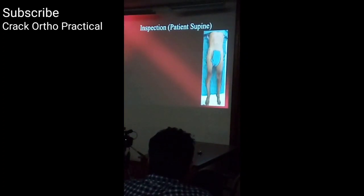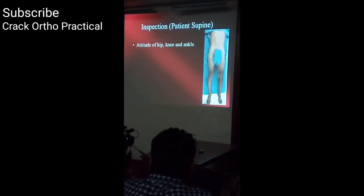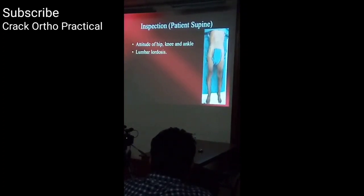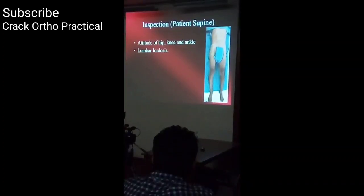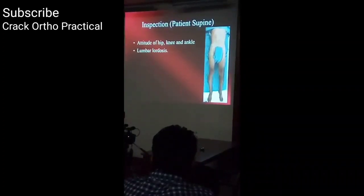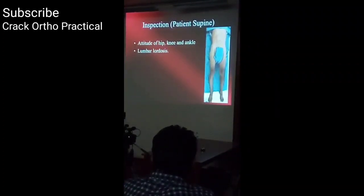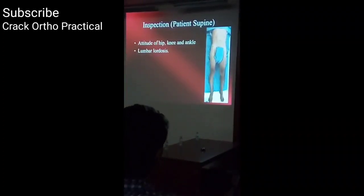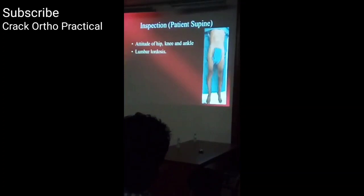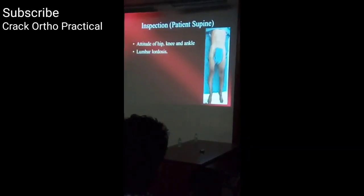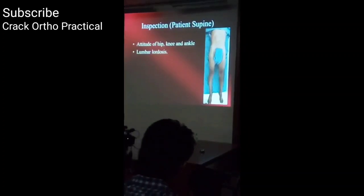When the patient is in the supine position, assess the attitude — the position of the entire lower limb involving the hip, knee, and ankle — without touching the patient. Attitude refers to the entire lower limb position, whereas deformity pertains to one particular joint. Check for increased lumbar lordosis, as fixed deformities in the hip tend to be compensated by spine deformity. A coronal plane deformity like abduction or adduction deformity may cause scoliosis in the spine.